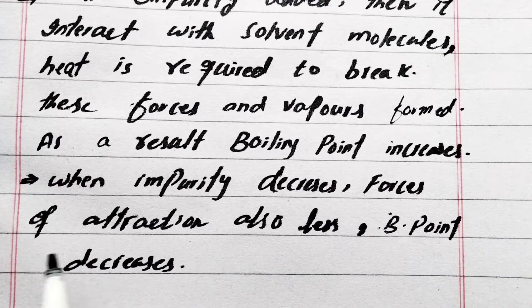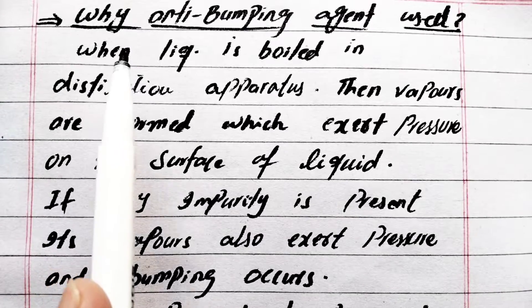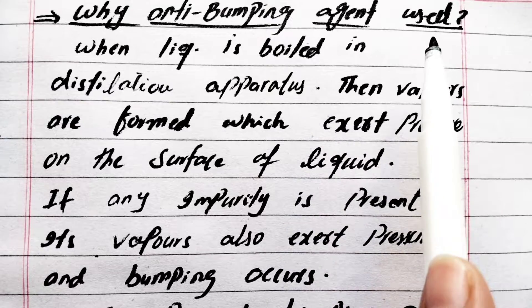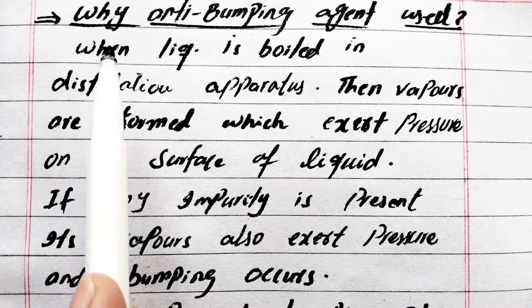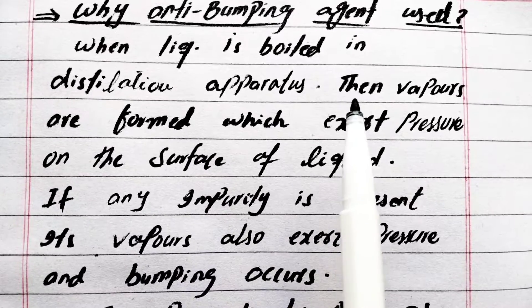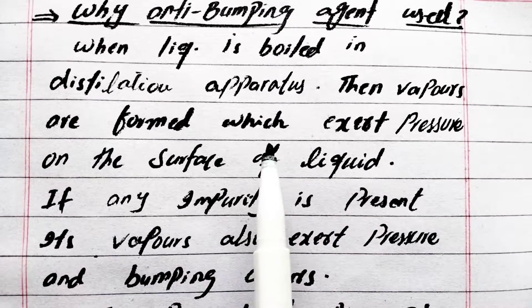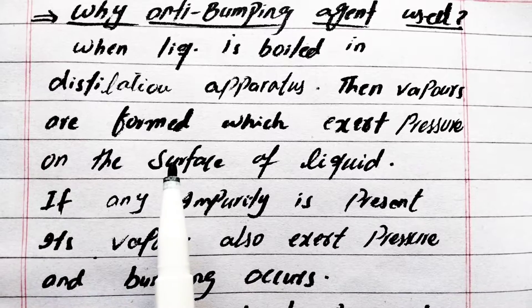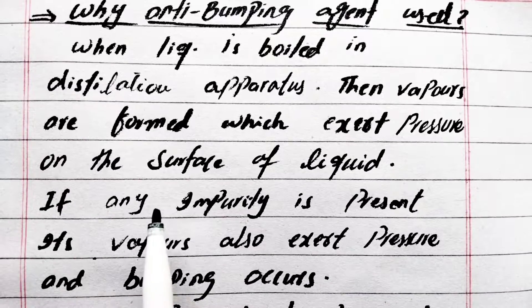Why is anti-bumping agent used during experiment? When we boil the liquid during distillation in distillating apparatus, vapors are formed which exert pressure on the surface of the liquid. If any impurity is present, its vapors also exert pressure and bumping occurs.